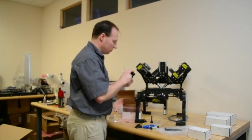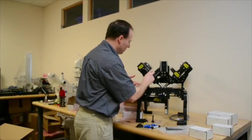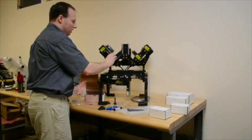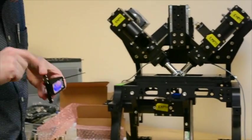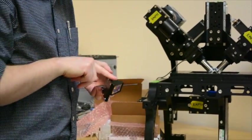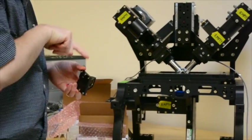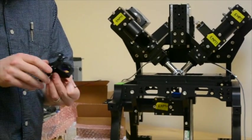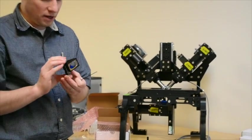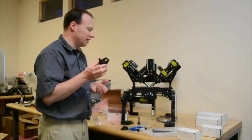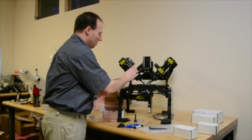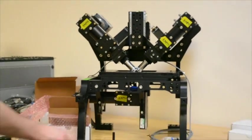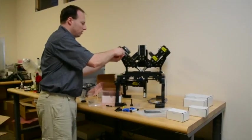So now we have the dichroic and an emission filter in this cube. And we're going to put it back onto the cube cover. The cube cover has a little eccentric screw right here. That eccentric screw fits into the groove and allows you to slightly move the D-cube back and forth, even once it's installed.